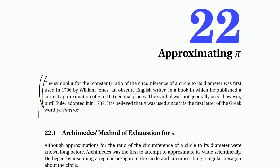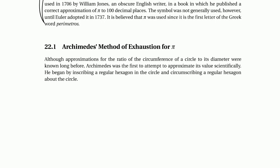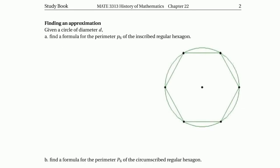Please read the assigned material. Here in this video, I want to show how to get the approximation for pi using the same method Archimedes did. It's actually about finding the circumference of a circle. Let's take the approximation through some inscribed regular polygons. We can start from the triangle and the square, but let's start from the hexagon.